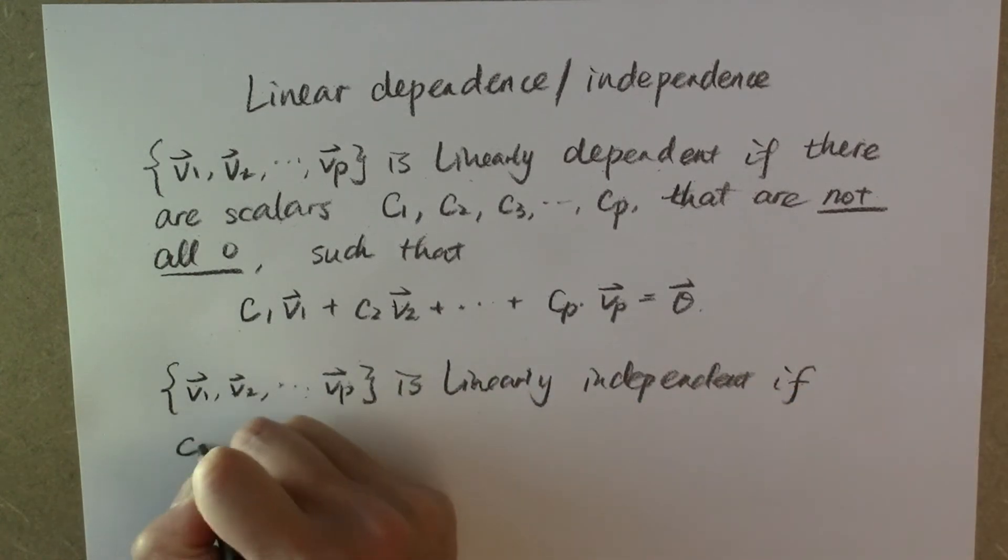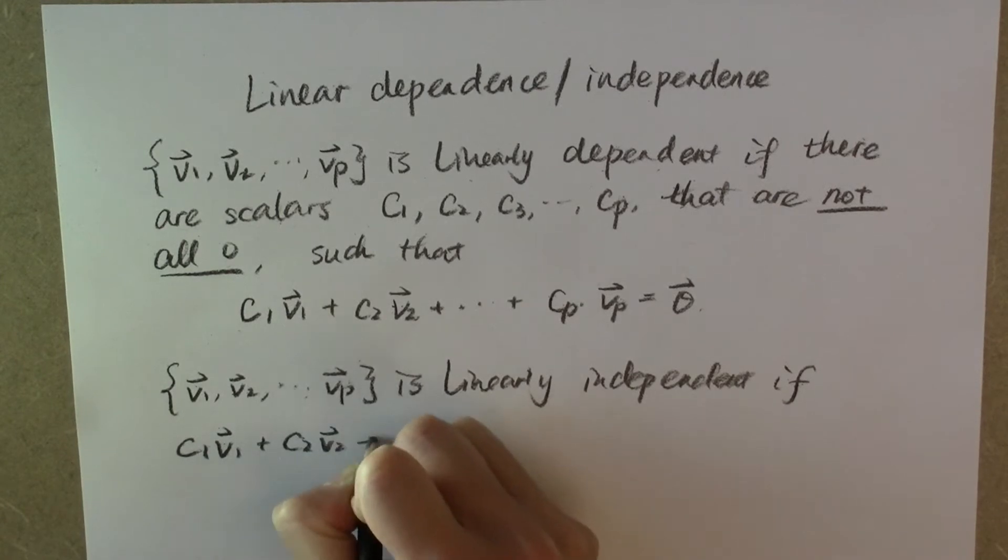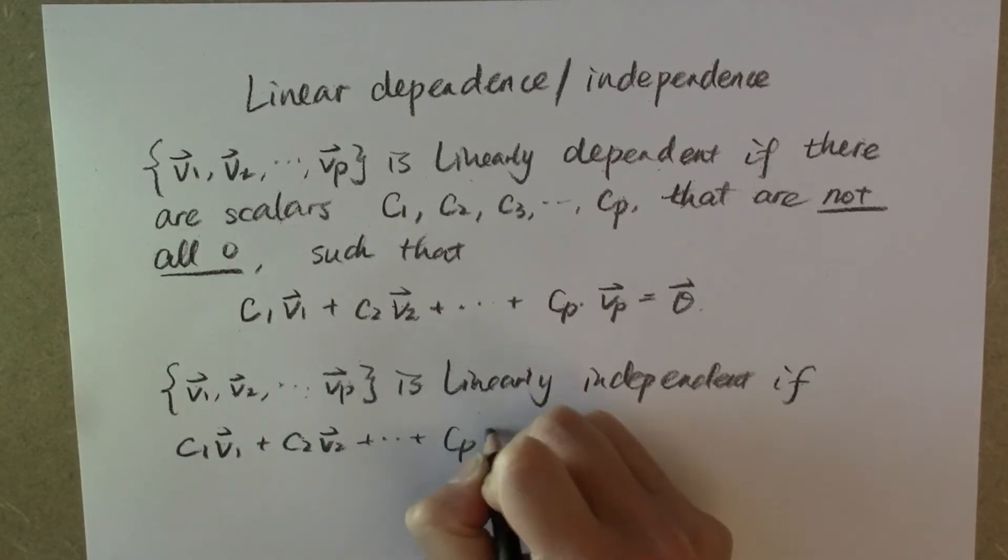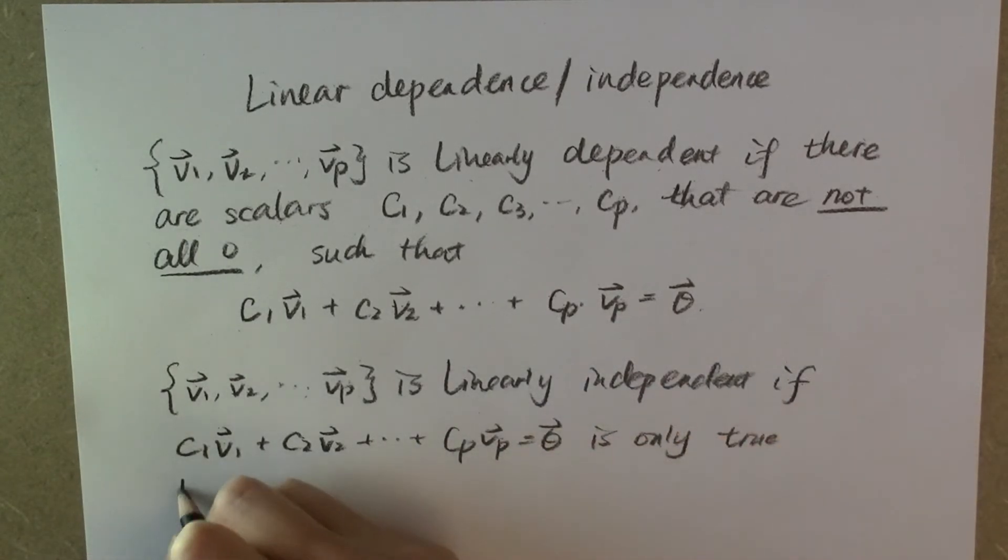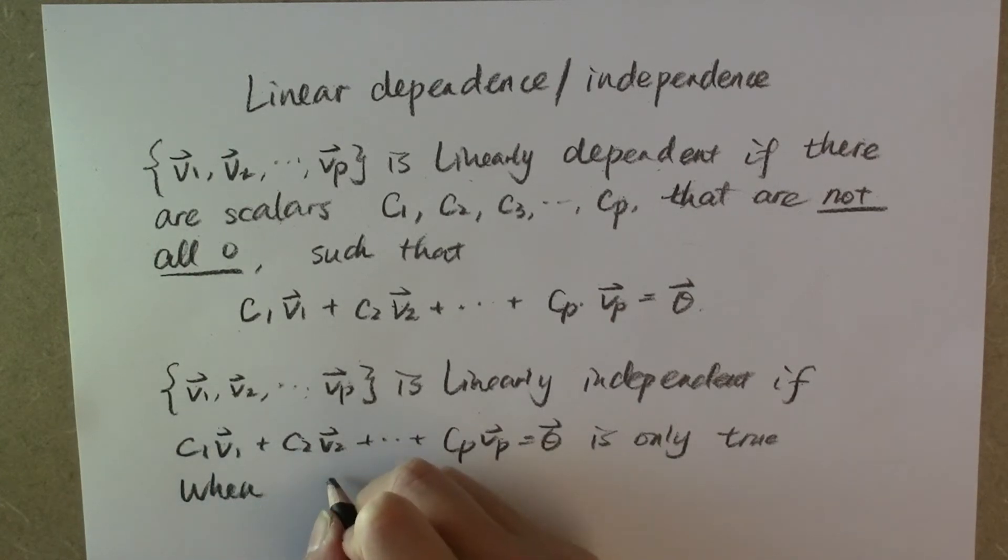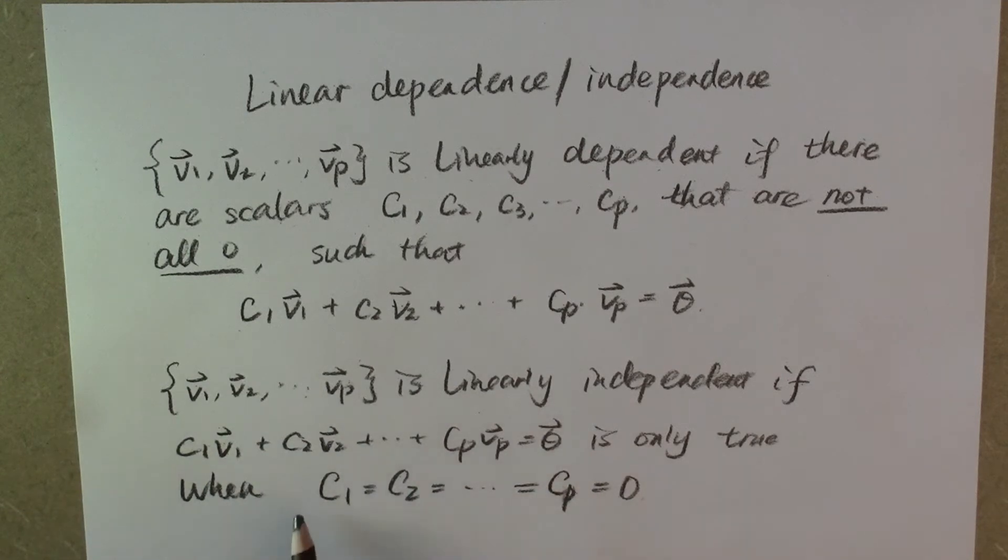This set of vectors is linearly independent if this equation is only possible when all these scalars c₁, c₂, ..., cₚ are equal to zero. So the only solution to this equation is the trivial solution—all the coefficients equal to zero.